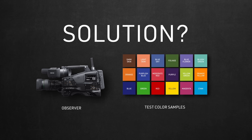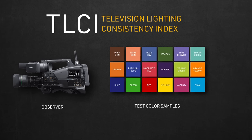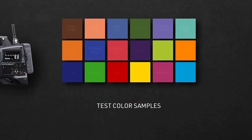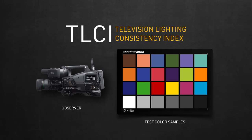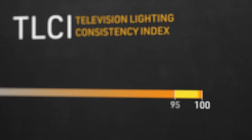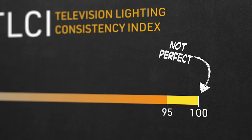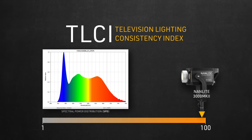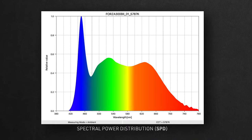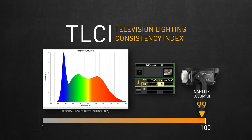What you're looking at is the first step in the right direction, called Television Lighting Consistency Index, or TLCI. If that color chart looks familiar, it's because these are the same color chips found in the X-Rite Color Checker Classic. TLCI's score is from 1 to 100, and 95 to 100 is where most commercial brands are. But 100 by all means does not mean it's a perfect light with a full color spectrum. TLCI is visually represented in a Spectral Power Distribution graph, or SPD, such as this one from the Nanlite 300B Mark II, which had an incredibly high TLCI of 99.